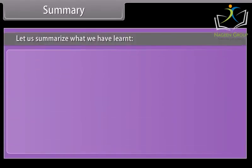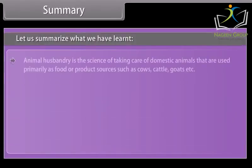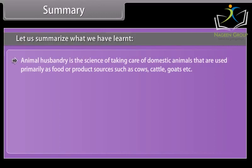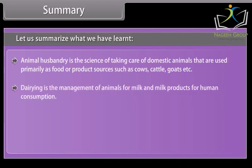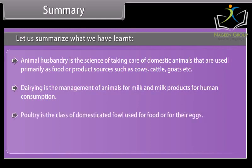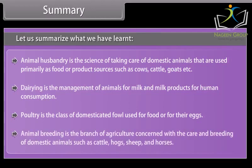Let us summarize what we have learnt. Animal husbandry is the science of taking care of domestic animals used primarily as food or product sources such as cows, cattle, goats, etc. Dairying is the management of animals for milk and milk products for human consumption. Poultry is the class of domesticated fowl used for food or for their eggs. Animal breeding is the branch of agriculture concerned with the care and breeding of domestic animals such as cattle, hogs, sheep, and horses.